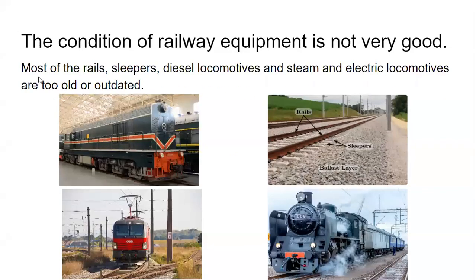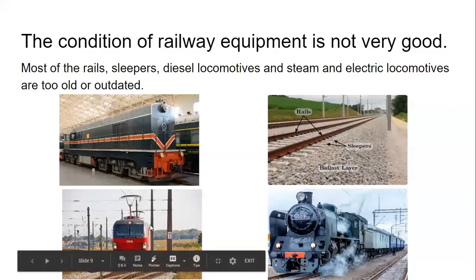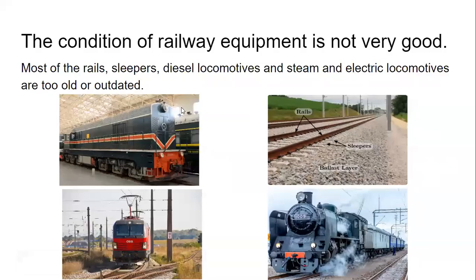Now let's talk about the condition of railway equipment in Pakistan. The railway equipment in Pakistan is not in very good condition. Most of the rails and sleepers — the horizontal crosspieces that keep the rails stable — are in a worn-out condition. The diesel locomotives, steam locomotives, and electric locomotives are also not in good condition.